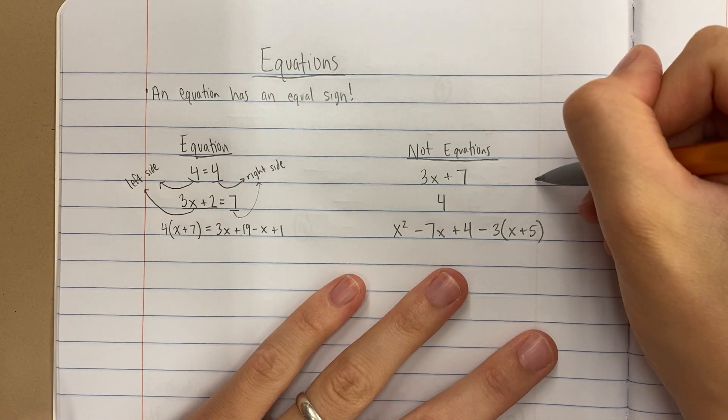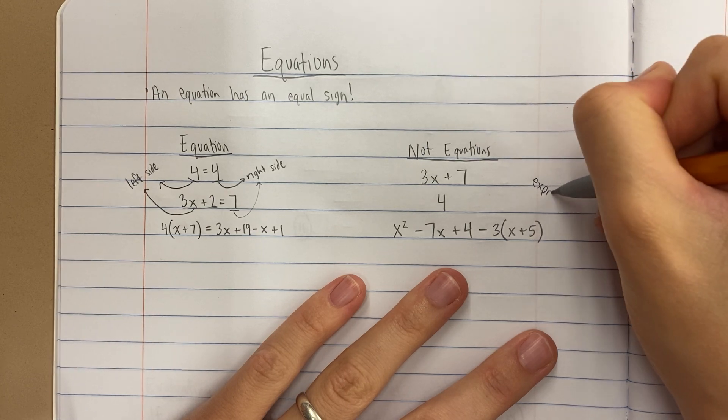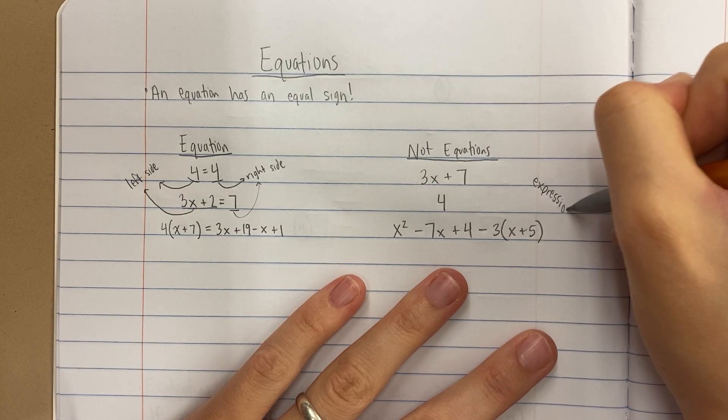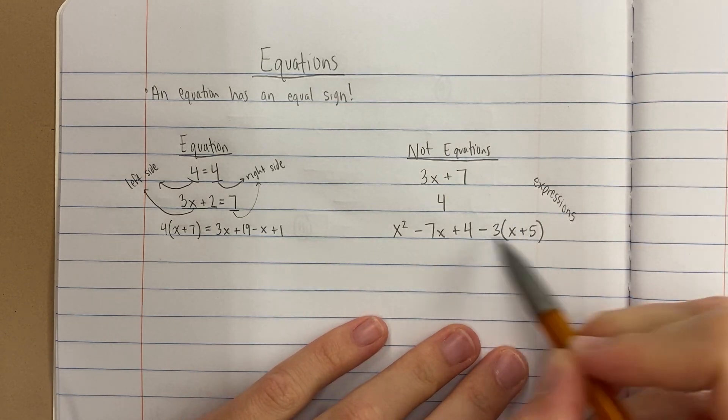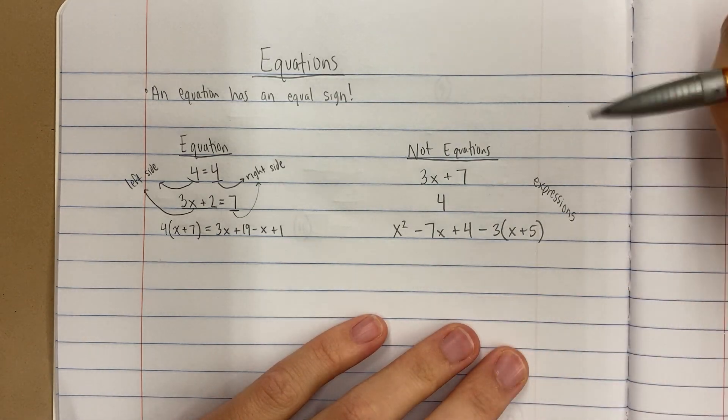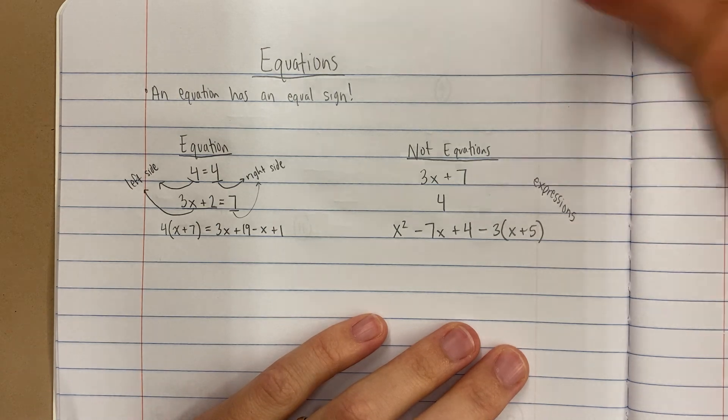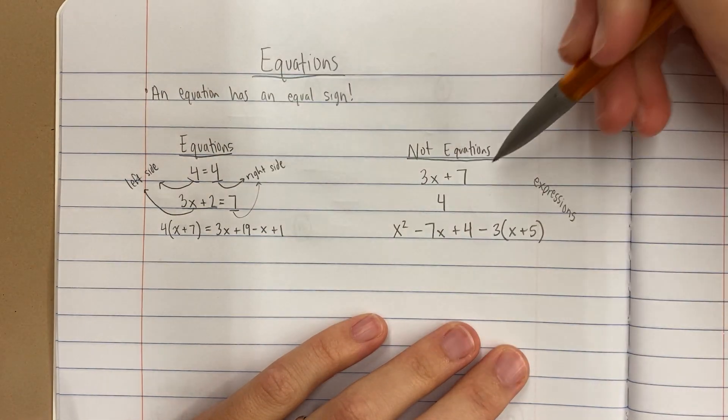These are called, when they're not equations, they're called expressions. These are expressions and we can simplify expressions like this one. We can distribute, we can combine like terms, we can make it shorter, we can simplify, but we can't solve it. These are equations and not equations.